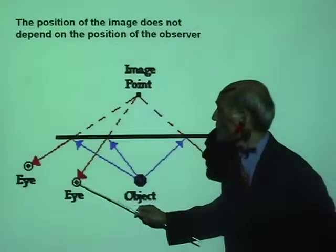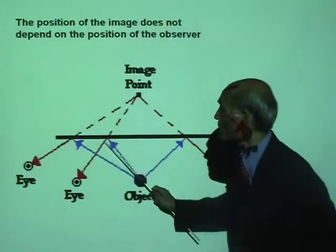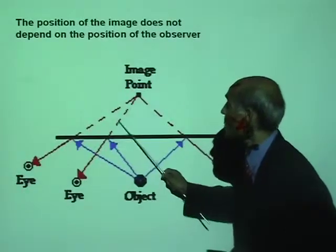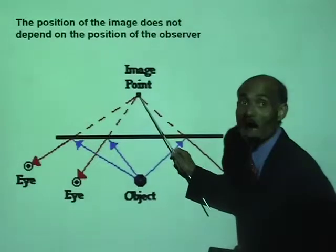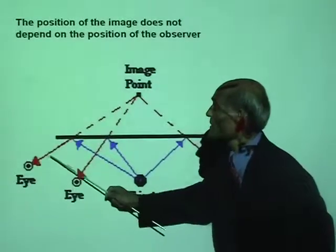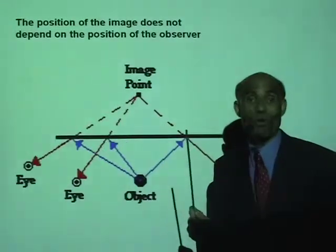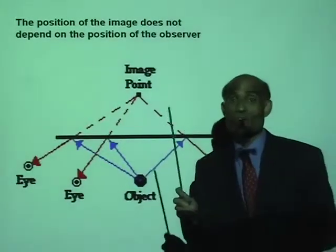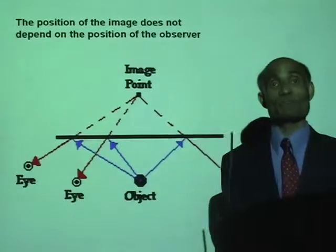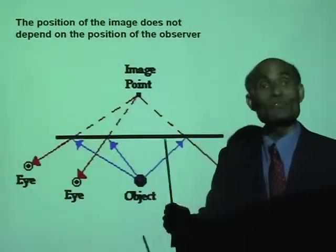If you look from here, a ray falling on the mirror at this point gets reflected, and that reflected ray appears to come from the same point. It doesn't matter at what point you look from — the position of the image is always the same.